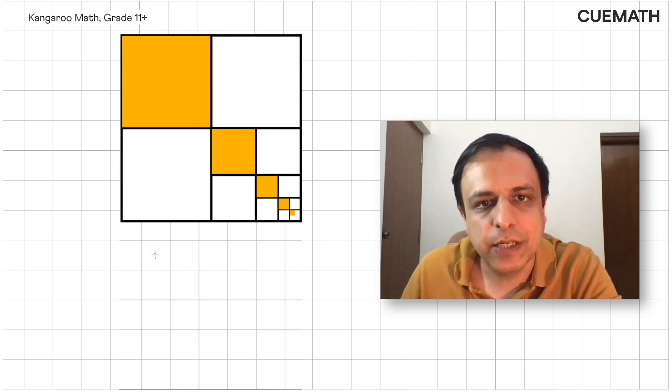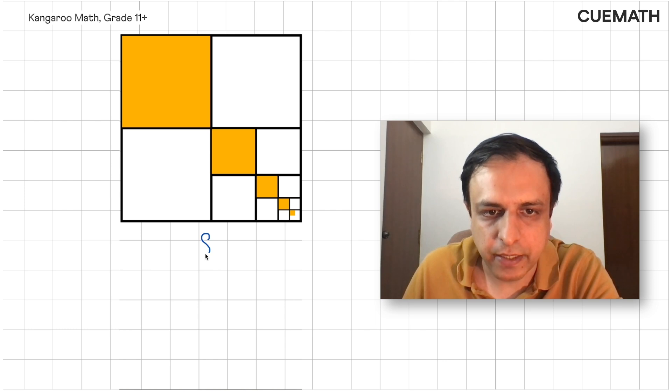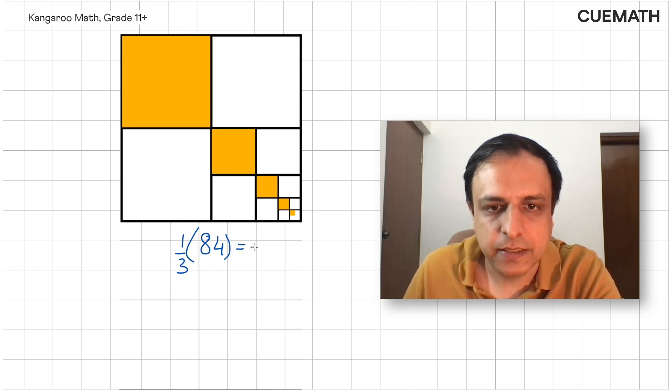But the sum of all the L-shaped regions is simply the total area of the large square which is 84, so the sum of the yellow squares will be one third of 84 which is 28. So 28 is our answer.